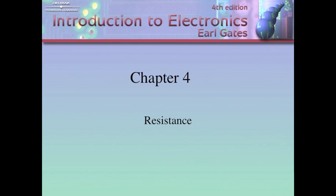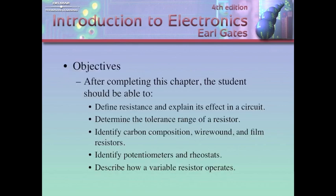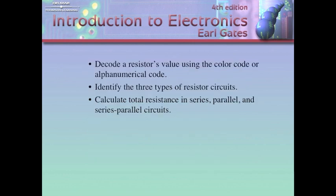We talked about voltage and current already. This is a whole chapter dedicated to the property of resistance. After completing this chapter, you're going to be able to define resistance and explain its effects in a circuit. Determine the tolerance range of a resistor. Identify carbon composition, wire wound, and film resistors. Identify potentiometers and rheostats. Describe how a variable resistor operates. Decode a resistor's value using the color code or alphanumeric value. Identify the three types of resistor circuits. And calculate total resistance in series, parallel, and series-parallel circuits — or as I call them, complex circuits, which contain both series and parallel components at the same time.